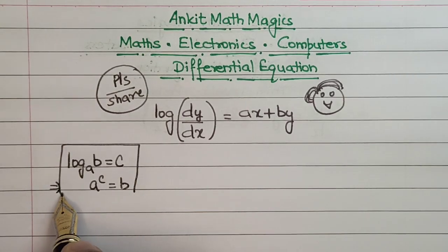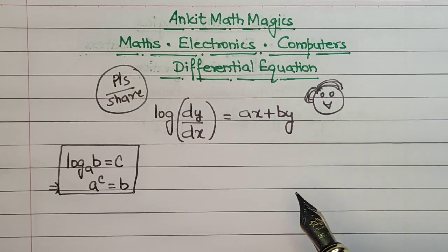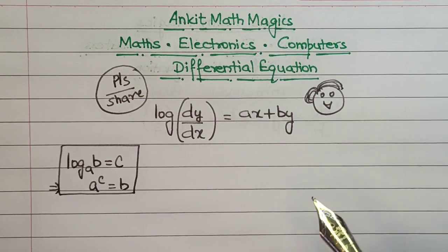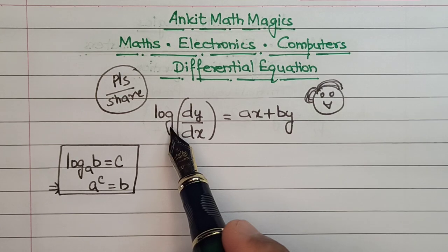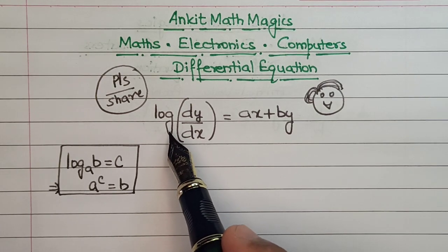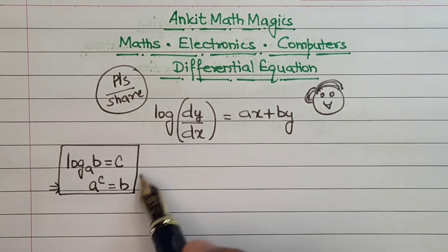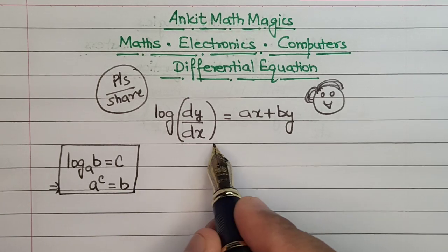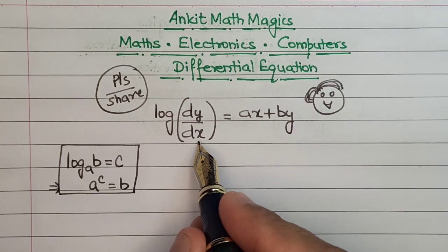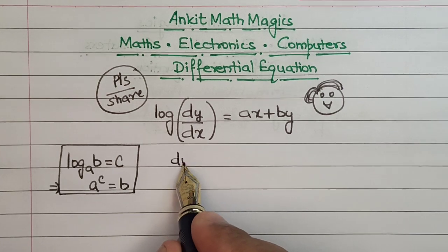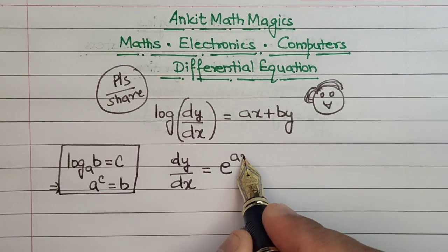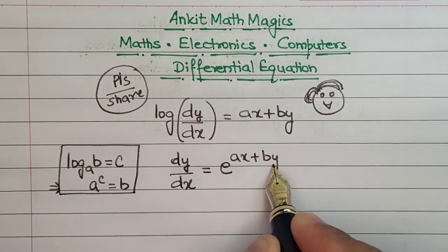This is the property of logarithm that we will be using. I am considering the base of this logarithm to be e. When I combine these two factors together, e raised to the power ax + by will equal dy/dx. So dy/dx = e^(ax+by).